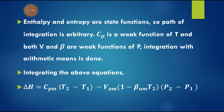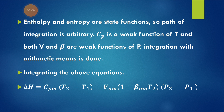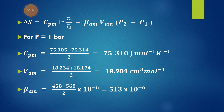CP is a weak function of temperature, and both V and beta are weak functions of pressure, so we make the integration based on arithmetic means. Integrating the two equations, delta H becomes equal to CPM into (T2 minus T1) plus VAM into (1 minus beta_AM · T2) into (P2 minus P1), where AM refers to the arithmetic mean.